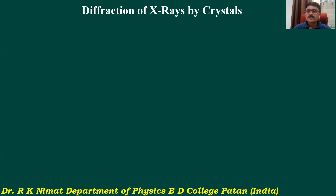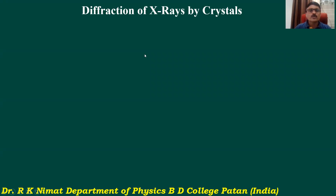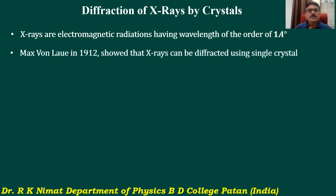Now we will discuss the diffraction of X-rays by crystals. X-rays are electromagnetic waves — electromagnetic radiations having a wavelength of the order of one angstrom unit. If you know the production of X-rays by a Coolidge tube, we have seen how X-rays are produced, their properties, continuous X-rays, and characteristic X-rays. So X-rays are electromagnetic radiations with a very short wavelength of the order of one angstrom unit.